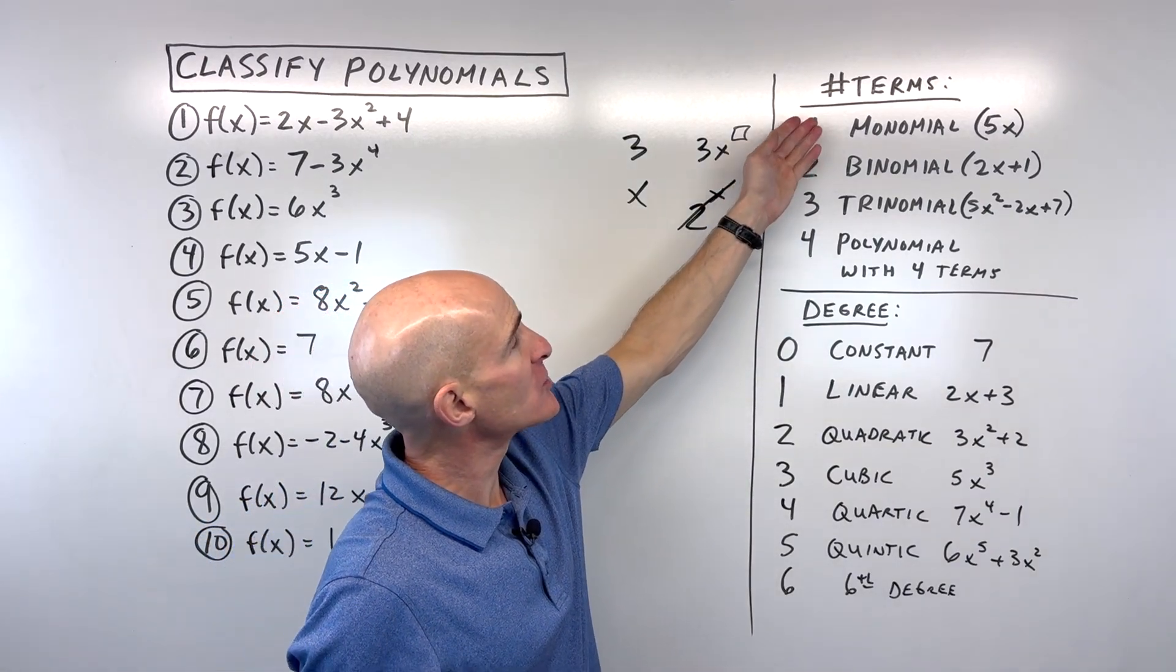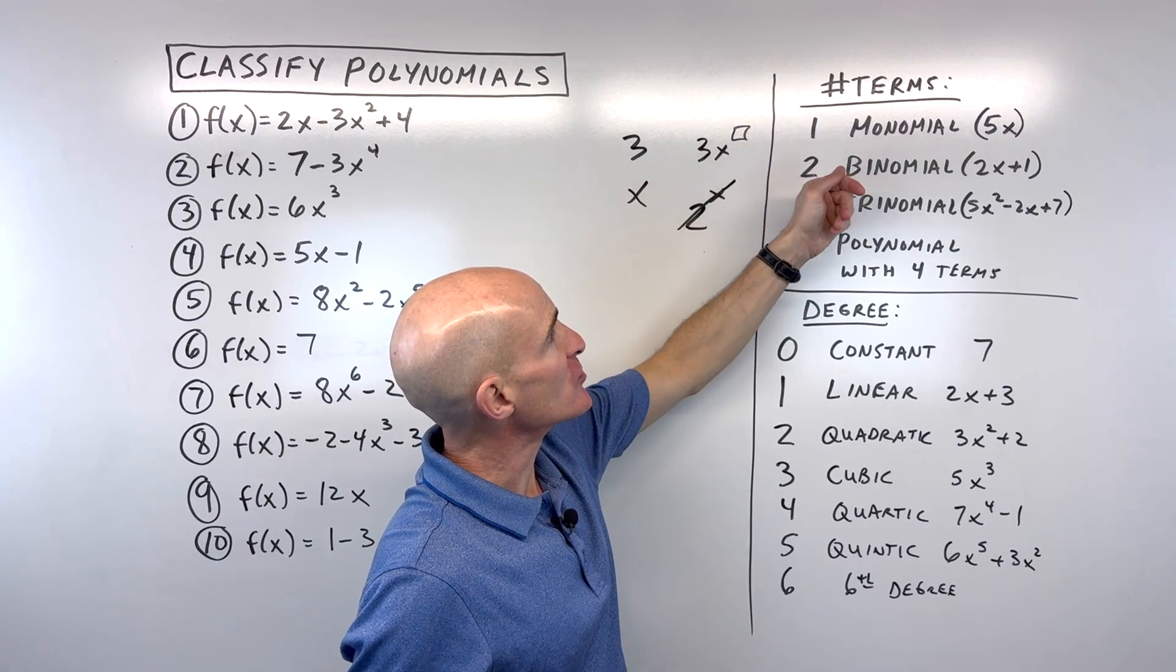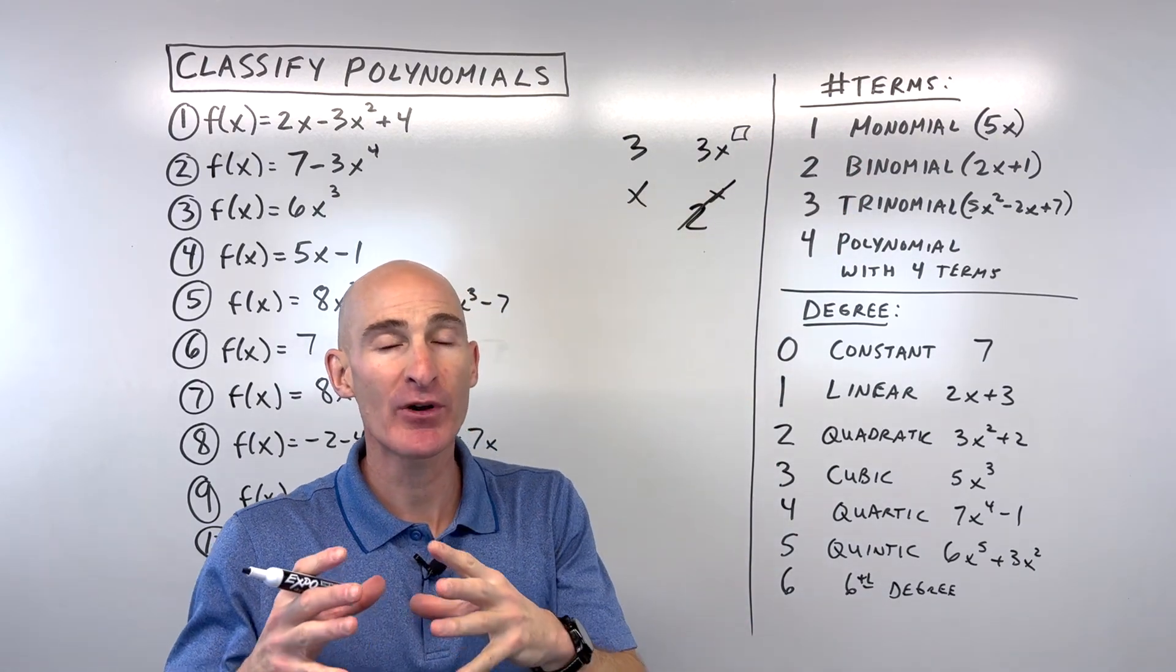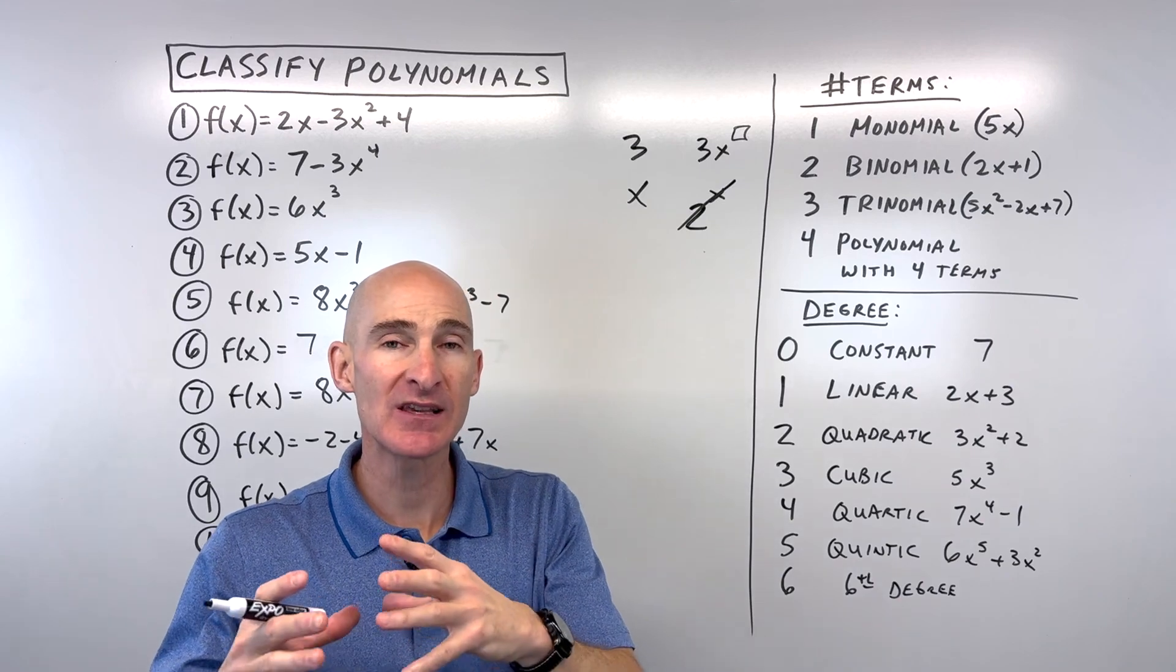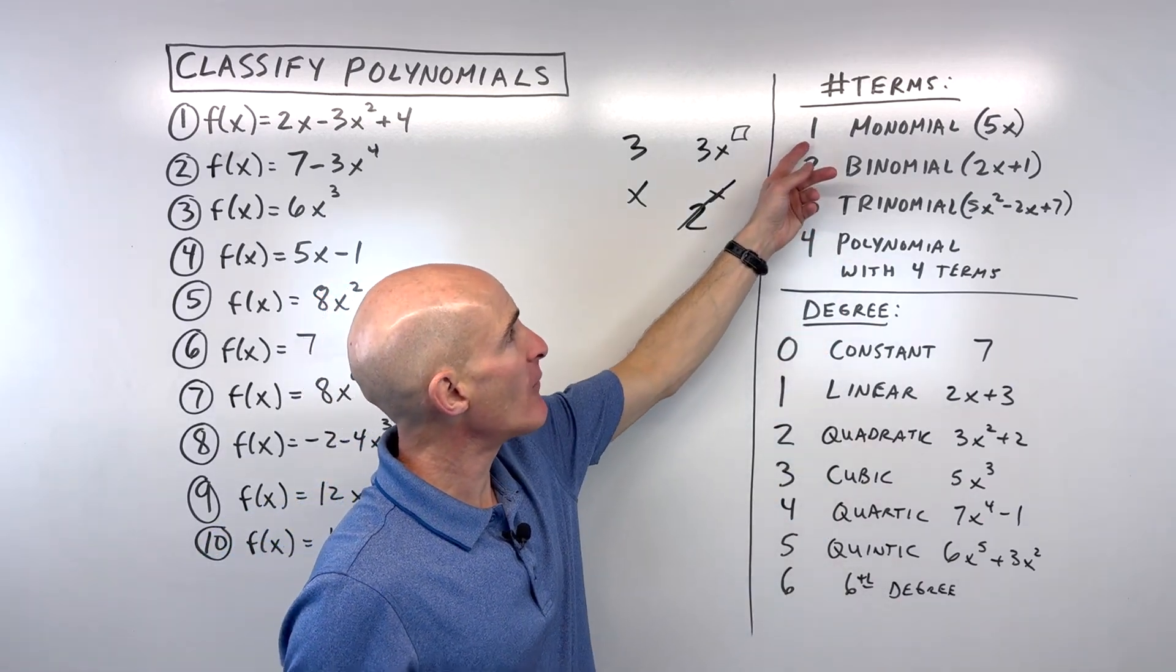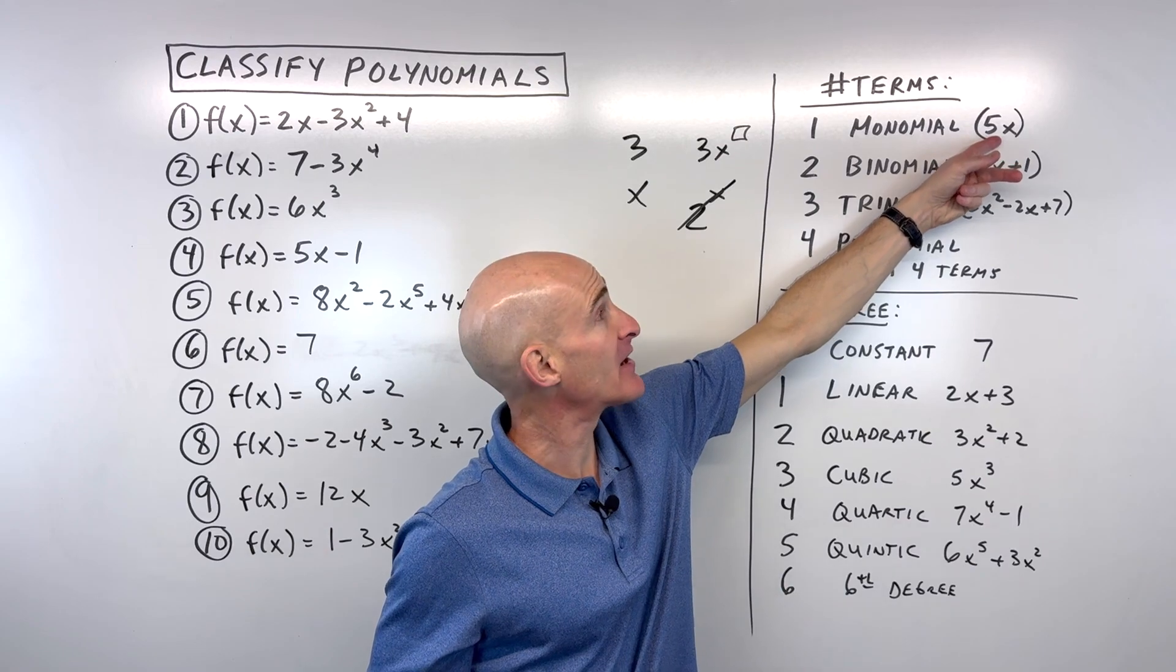So let's go through the different terminology. The number of terms, the terms are separated by plus or minus. A term is basically like a group. And so if you only have one group, we call that a monomial, for example, like 5x.